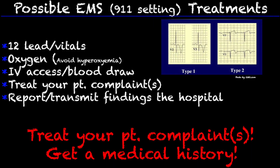So how do we treat Wellens' syndrome in the 911 EMS setting? To be honest, we'll be lucky if we ever are able to see Wellens' syndrome on a 12-lead. So: 12-lead, vitals, oxygen, IV access, blood draw — and the main thing is just to treat your patient's complaint. If your patient is complaining of chest pain, usually that's resolved before Wellens' syndrome shows up on the 12-lead, but treat accordingly. You also want to report and transmit your findings to the hospital. Take a quick look at type 1 and type 2 — in type 1 there are deeply inverted T-waves, and in type 2 you'll notice biphasic T-waves.